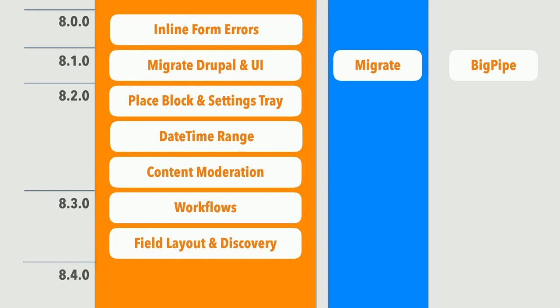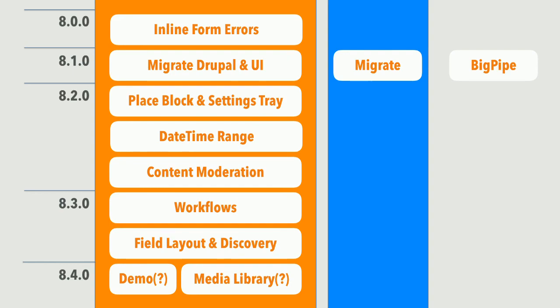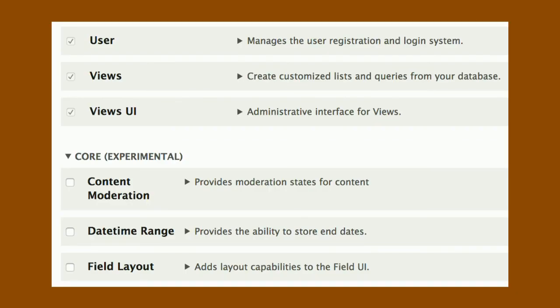We're also planning for 8.4.0: a demo installation profile that may be experimental, a demo theme that may be experimental, and a media library that may be experimental. When you look at this picture, you may understand the anxiety in the Drupal release management team, because we keep adding all these alpha experimental things and we are not really moving them forward. If we get Drupal 8.4.0 with this, we've spent more than two years working on things and haven't been stabilizing what we've been working on.